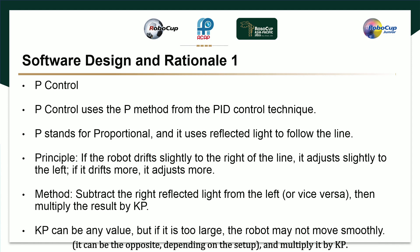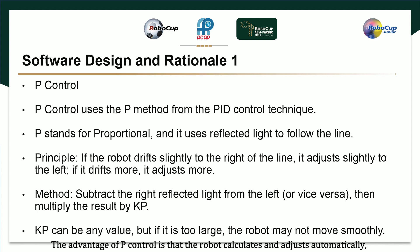The result can be positive or negative depending on the setup, and we multiply it by Kp. Kp can be any number, but if the value is too large, the robot may not move smoothly. The advantage of P control is that the robot calculates and adjusts automatically, making line following much easier.